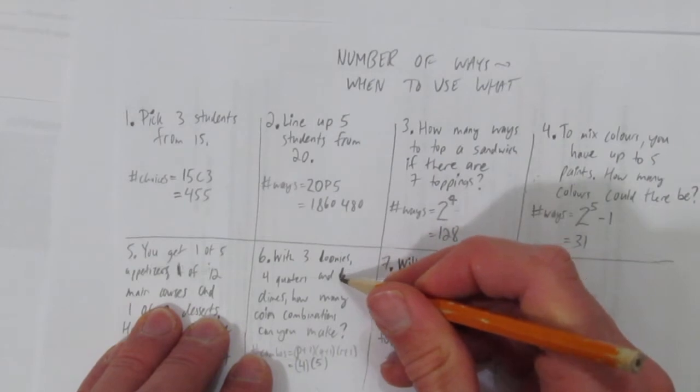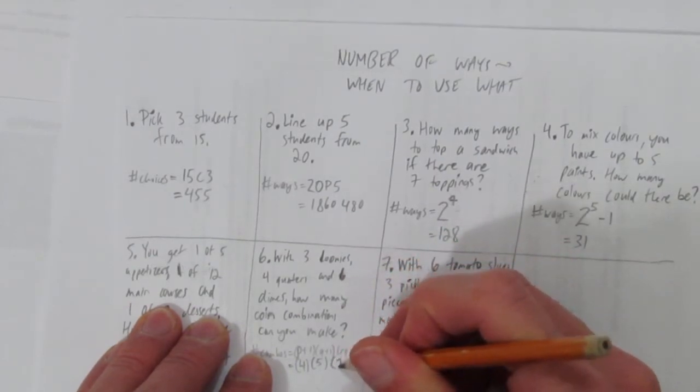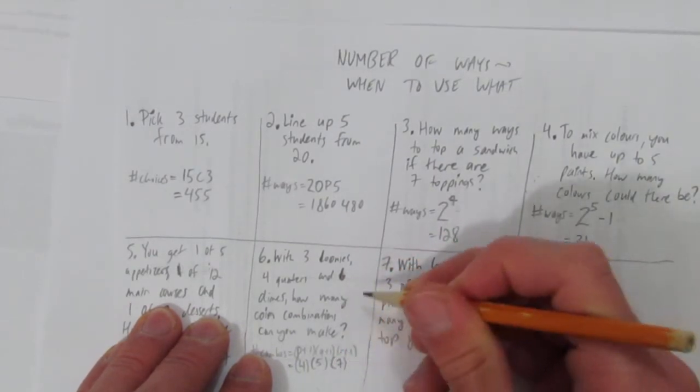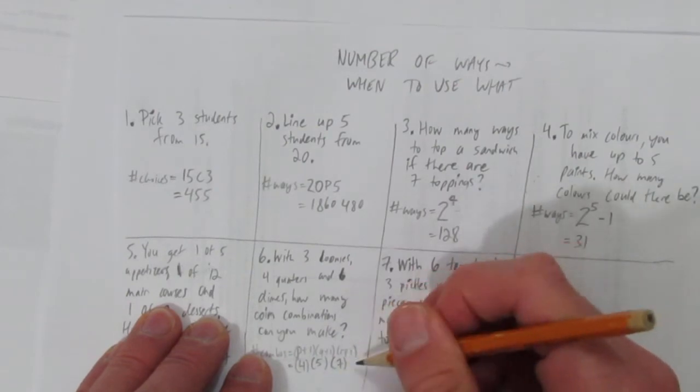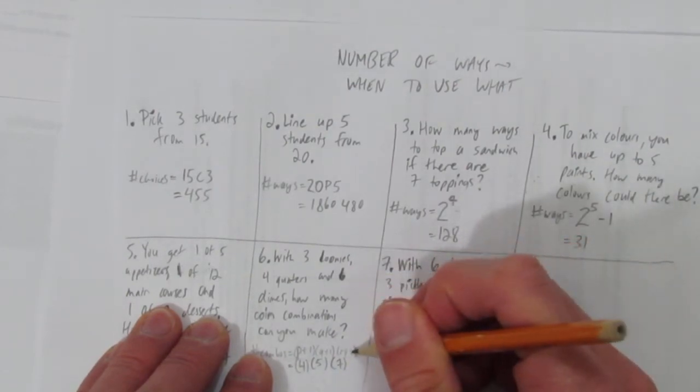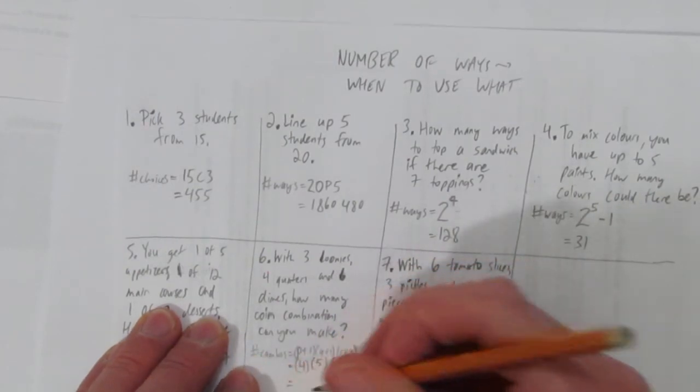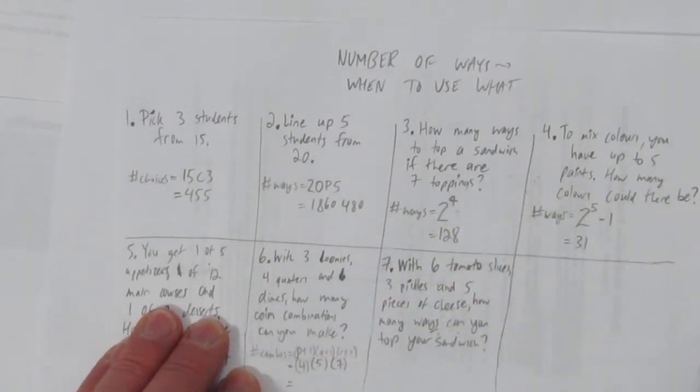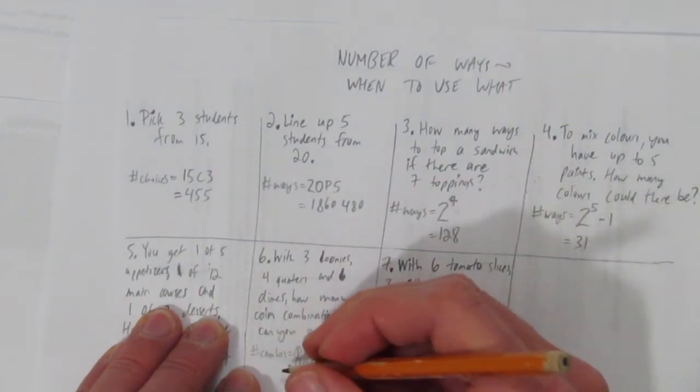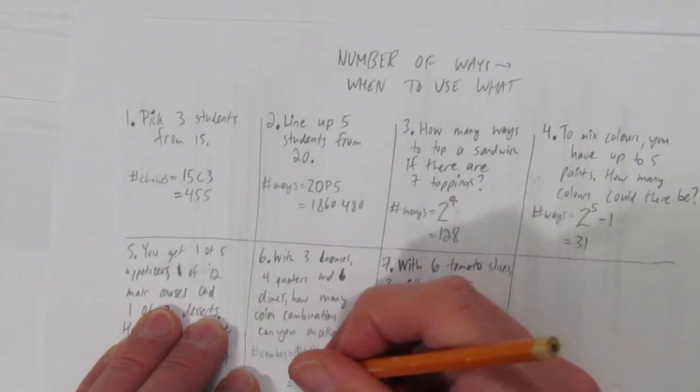With six dimes, you have seven possibilities: one dime, two dimes, three, four, five, six dimes, or no dimes. That's the plus ones, the no option. What's 4×5×7? You might be able to do that in your head, but if you can't, no problem. Just pull out the calculator. It's 140.